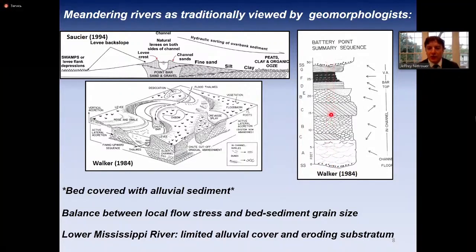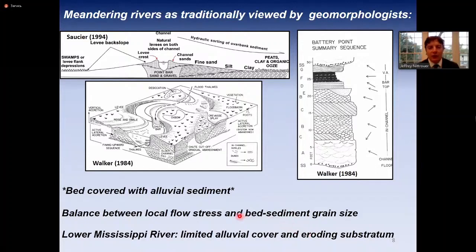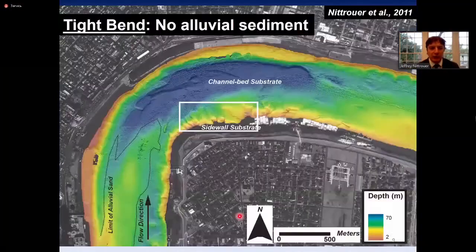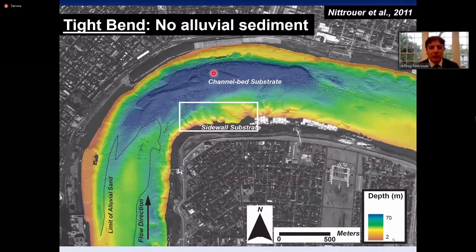Walker's 1984 stratigraphic work shows a vertical succession essentially of sand, perhaps with some mud, but overall complete sand. The traditional geomorphology viewpoint is that lowland rivers have beds entirely covered by sand with a balance between local flow stress and bed sediment grain size. The uniqueness of the lower Mississippi River is that we have some composition of eroding substratum with limited alluvial cover — very different from the traditional expectation.